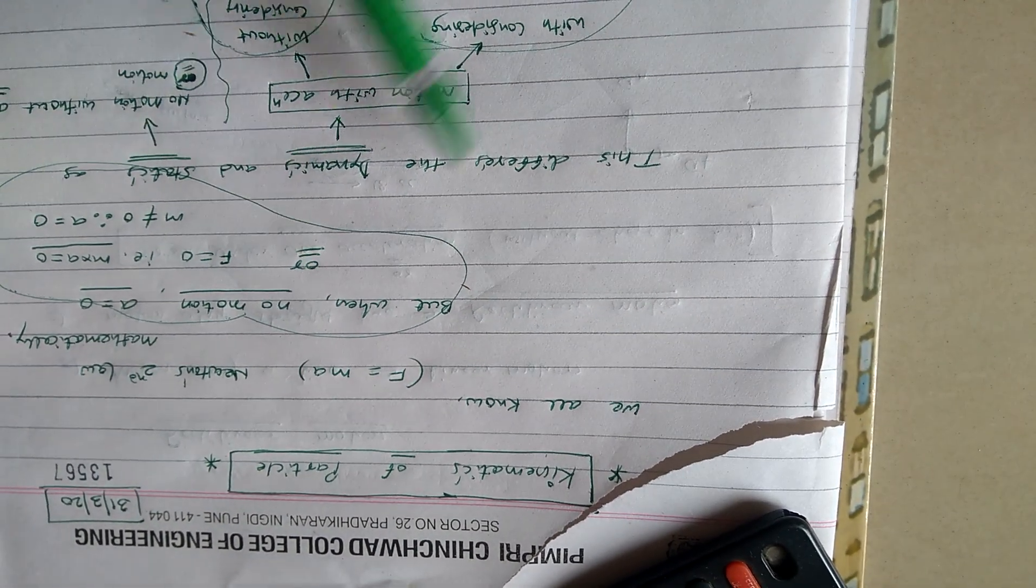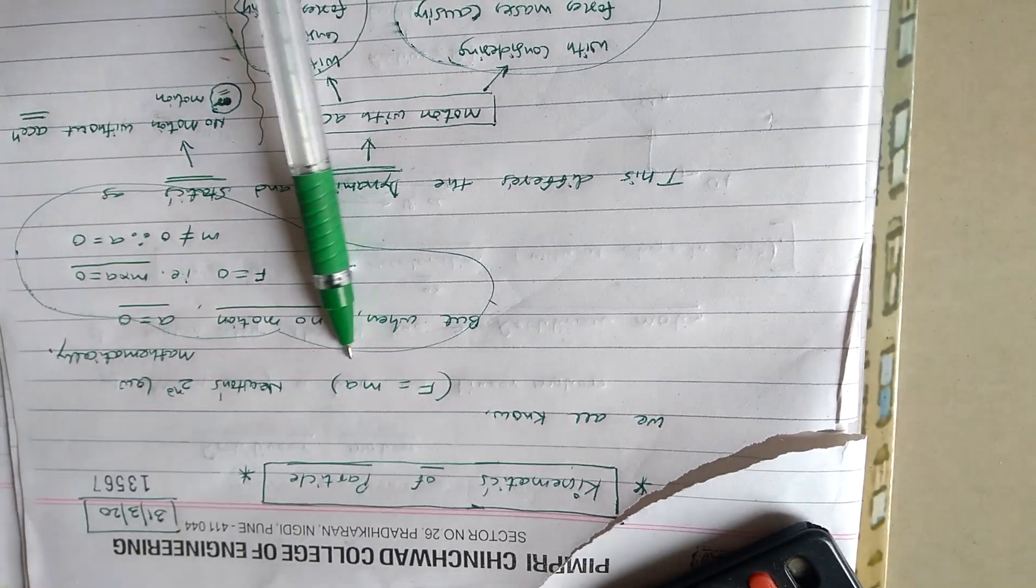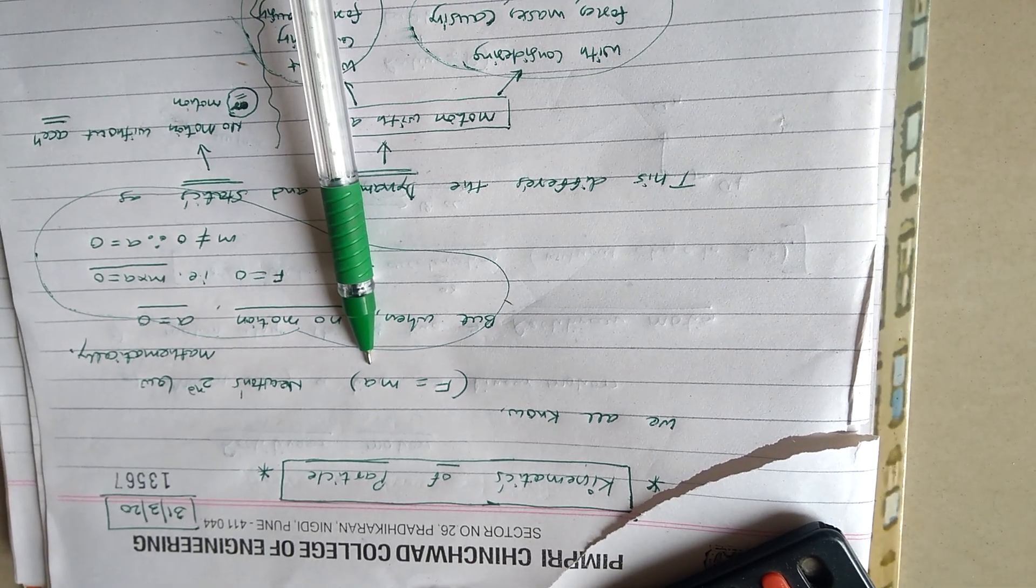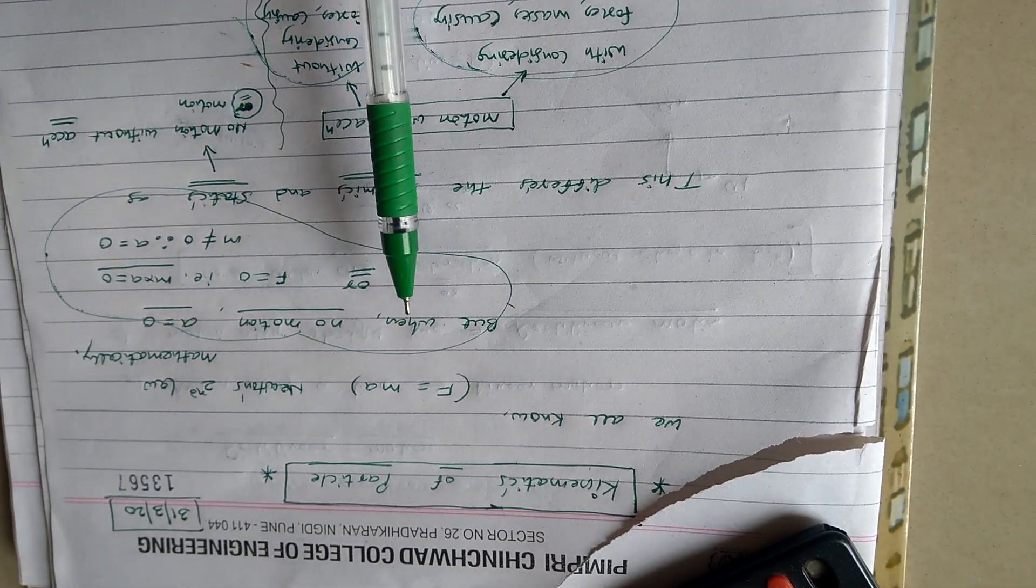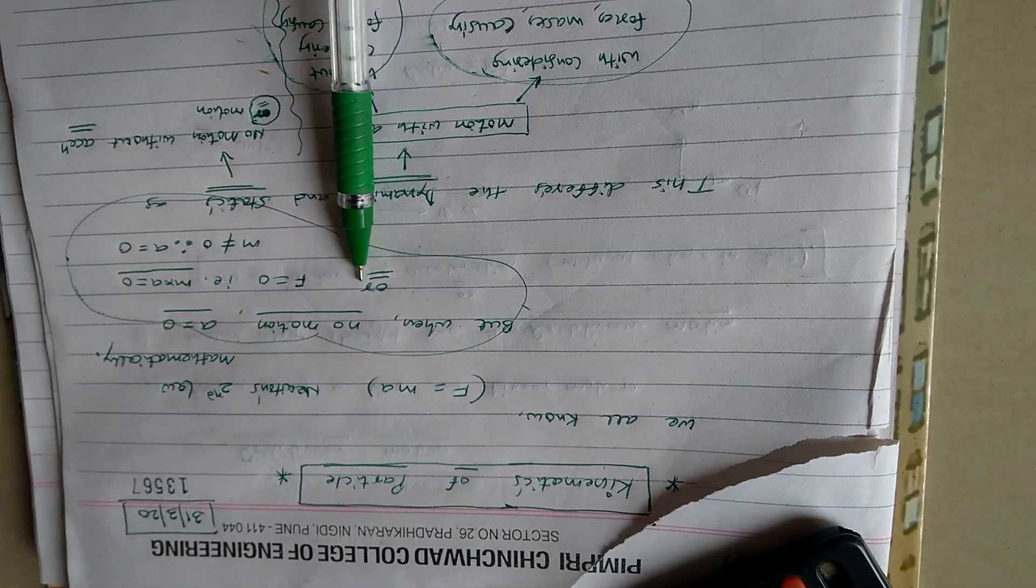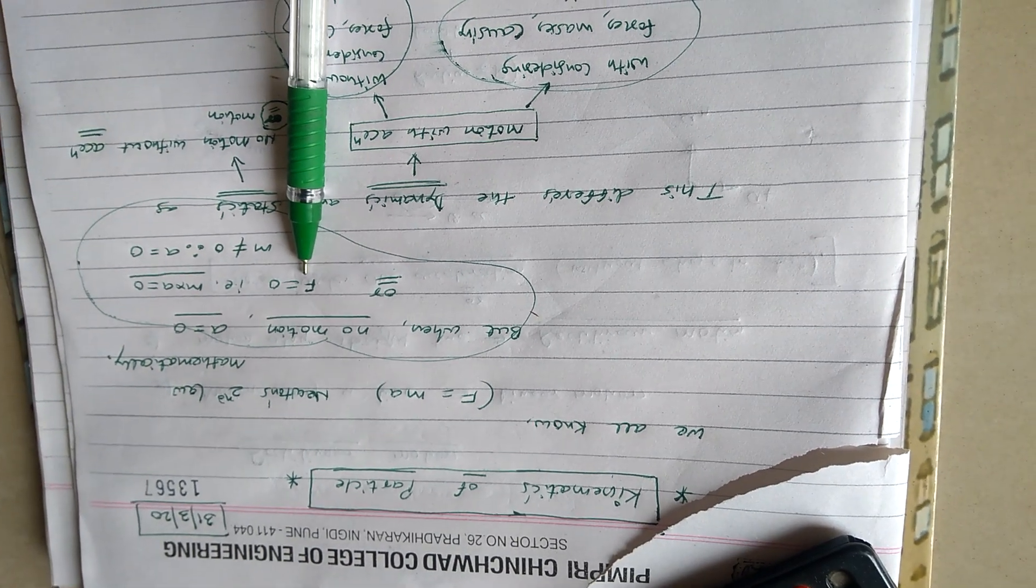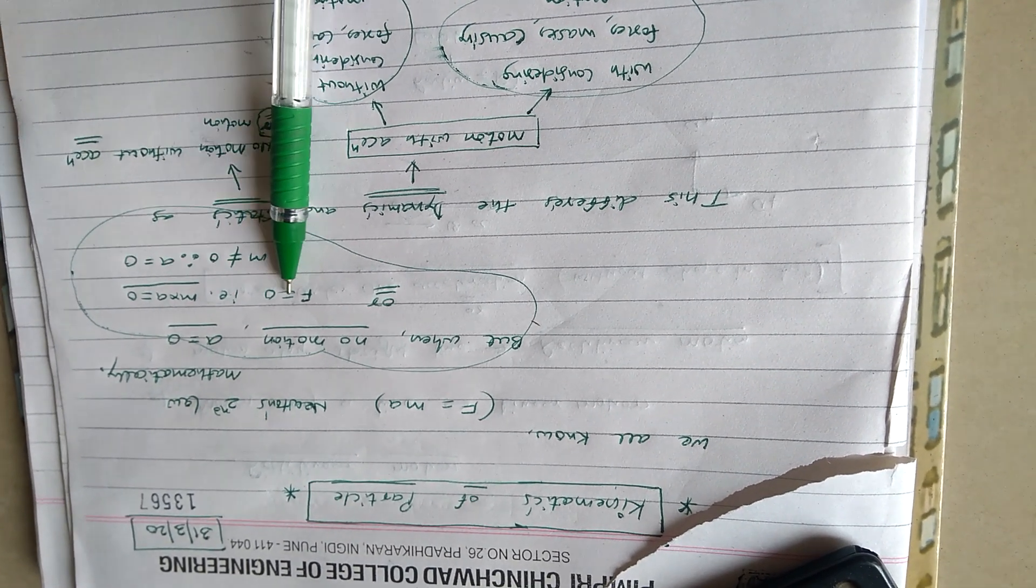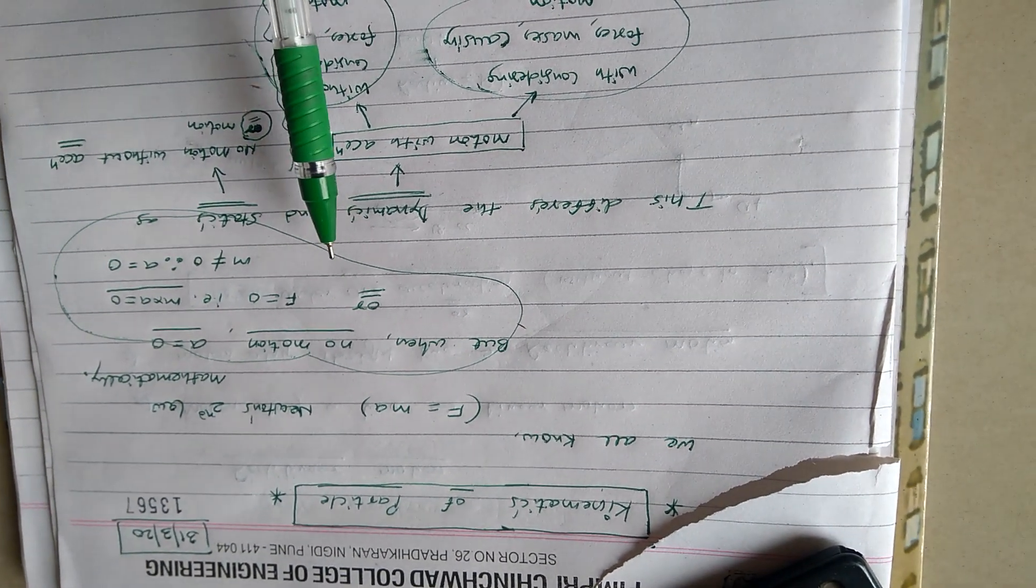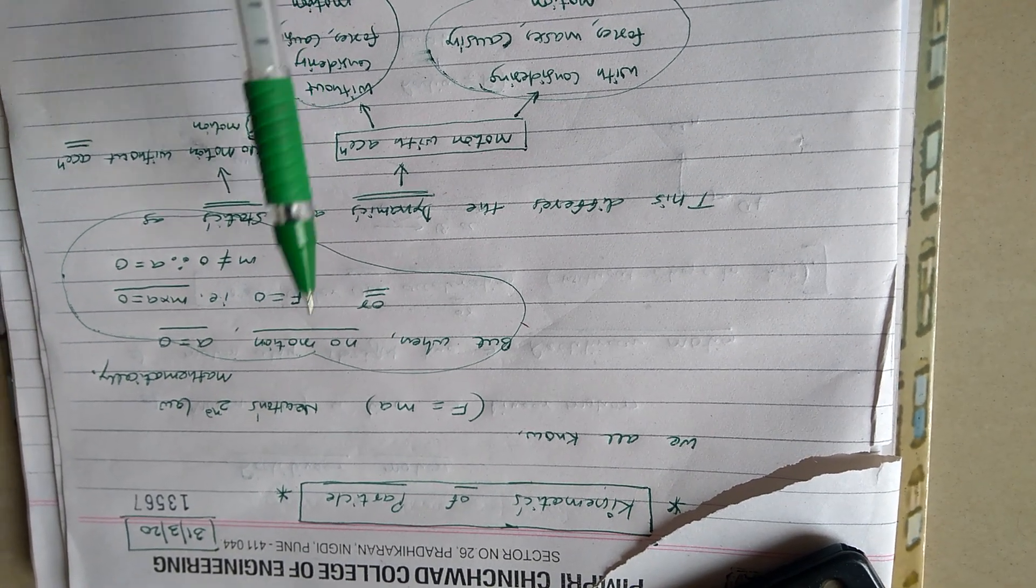Now when we start with all these, as per Newton's second law, force mathematically can be written as F equals mass into acceleration. So whenever there is motion, mass into acceleration is there. But if there is no motion, that itself indicates either the force is zero - the resultant force acting on a body - or the acceleration is zero. So F equals zero means no motion, but when there is motion, there is F equal to ma.